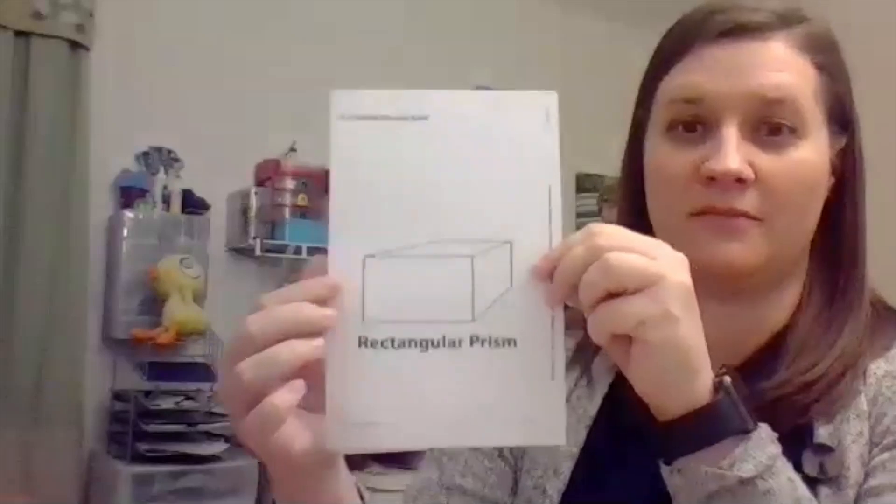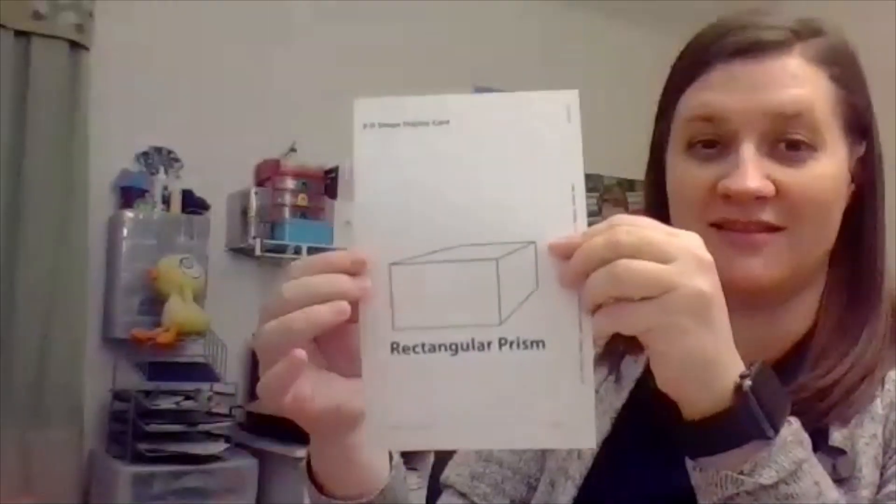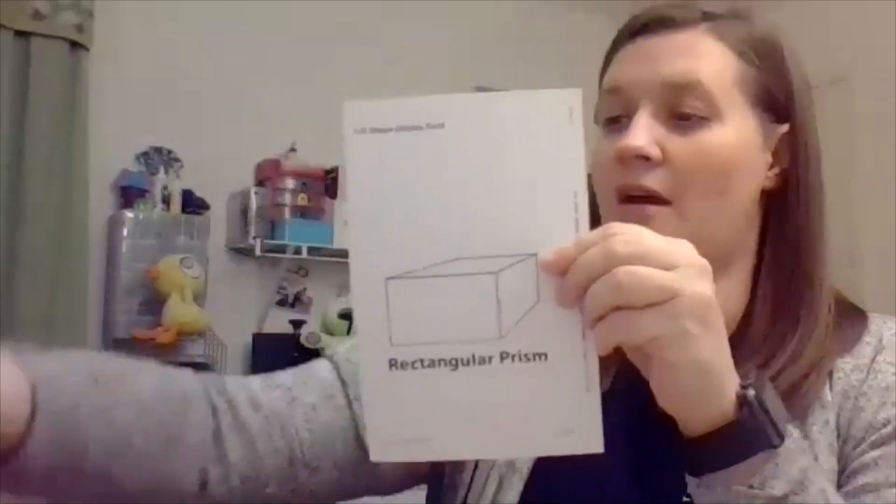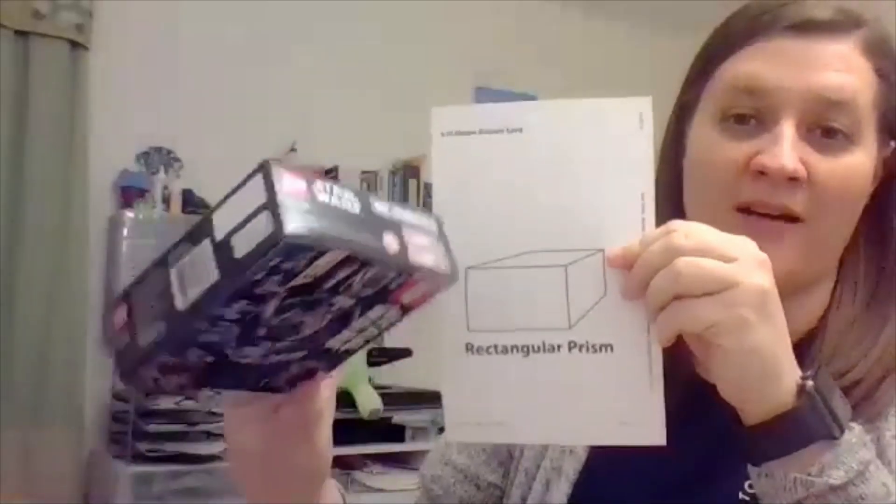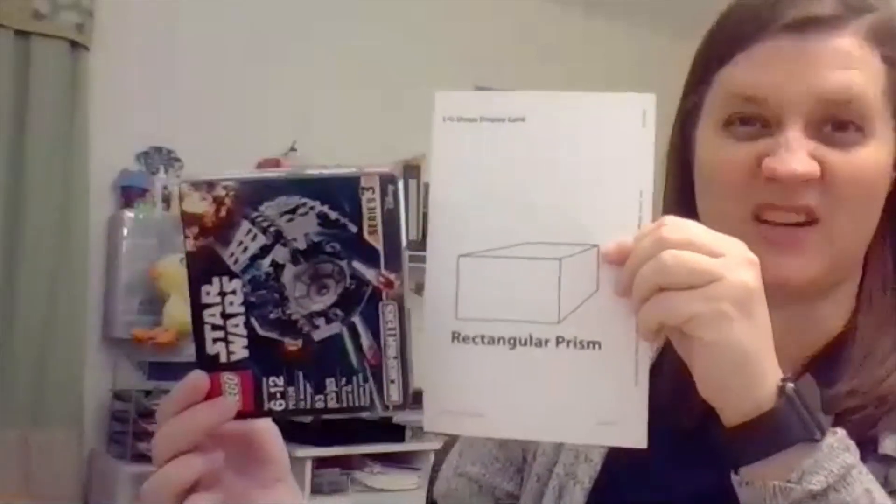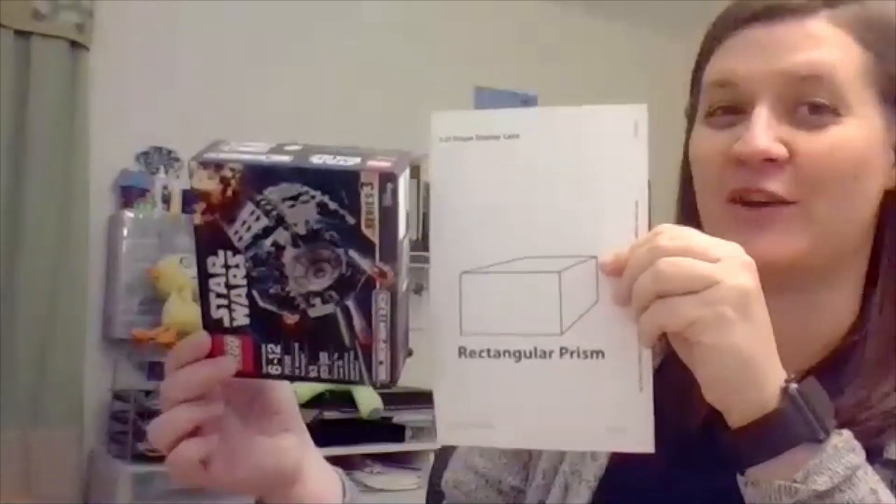One last shape for you. What shape do you see? I see that rectangle too. Let me find my object. I have a Lego box. This is called a rectangular prism. Can you say that? Rectangular prism. Great. So let's take a look.